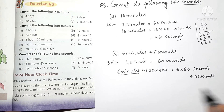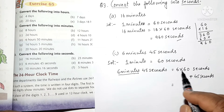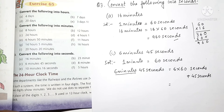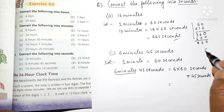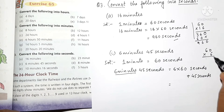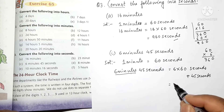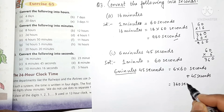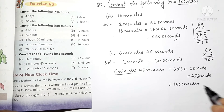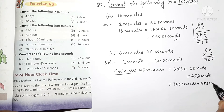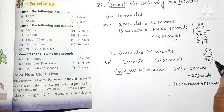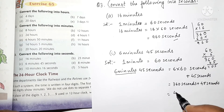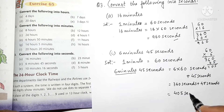Let us do the calculation. Plus 45 seconds we have to add. 6 multiplied by 60 equals 360 seconds, plus 45 seconds. Adding these: 360 plus 45 equals 405 seconds.